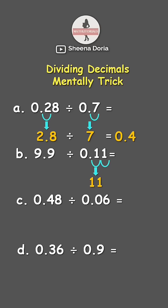Now since we move two places here, we also need to move two places in our dividend. 1, 2, place 0 here. So that will be 990. 990 divided by 11 is 90.